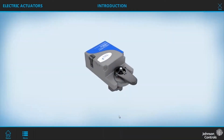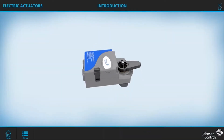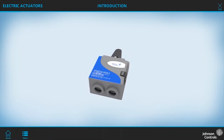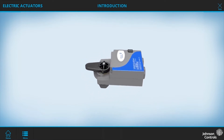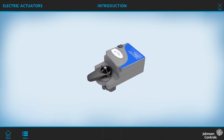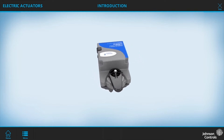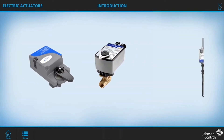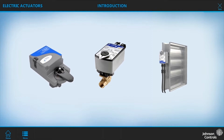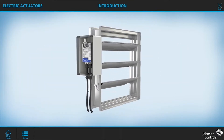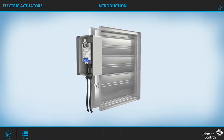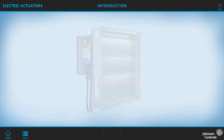An actuator is a mechanical device that converts energy into motion. In other words, an actuator is a motor that changes the position of a controlled device, like a valve or a damper, based on the electrical input received from a controller. It's the actuator that controls whether the damper is open or closed to regulate the flow of air or water.